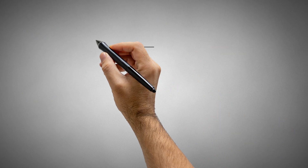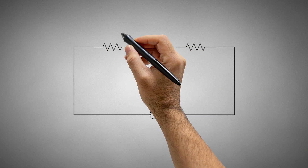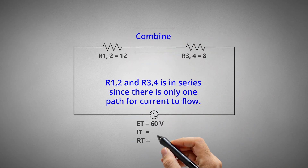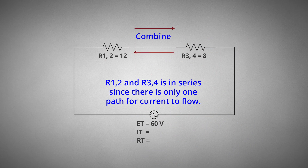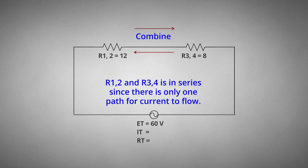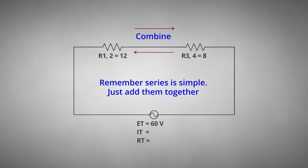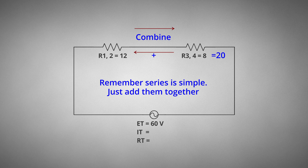Now redraw the circuit. R1-2 and R3-4 are in series since there is only one path for current to flow. Since we have identified this as a series circuit, we use the series rules for resistance. Remember, series is simple — just add them together. 12 plus 8 equals 20 ohms of total resistance.